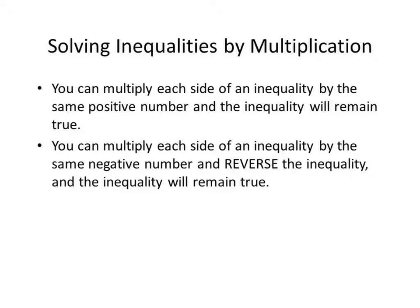Starting out with some properties, our first one says that you can multiply each side of an inequality by the same positive number and it will remain true. For example, if you agree that 2 is less than 6, if I multiply each side by 2, we're going to get 4 is less than 12, which is still true.